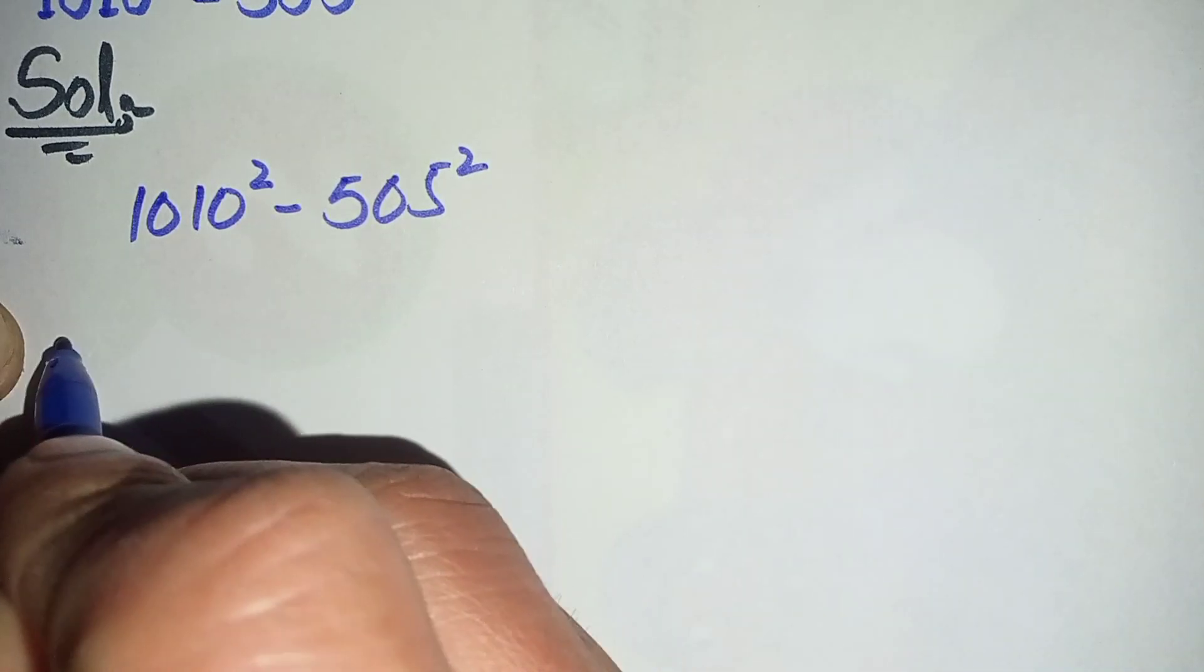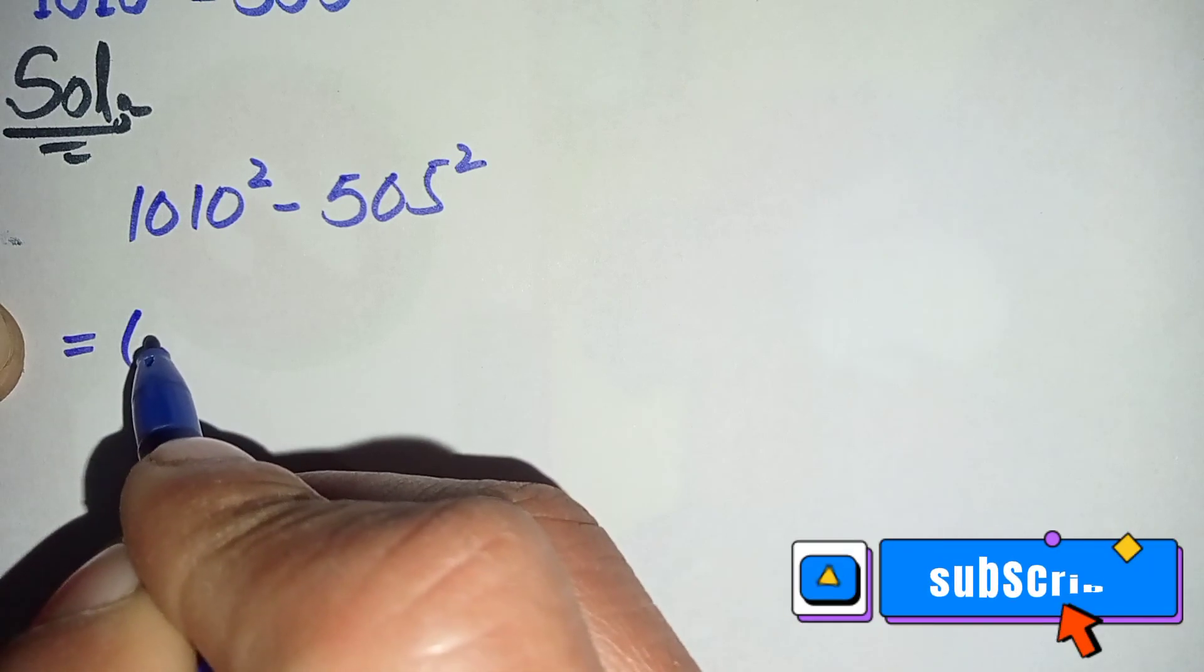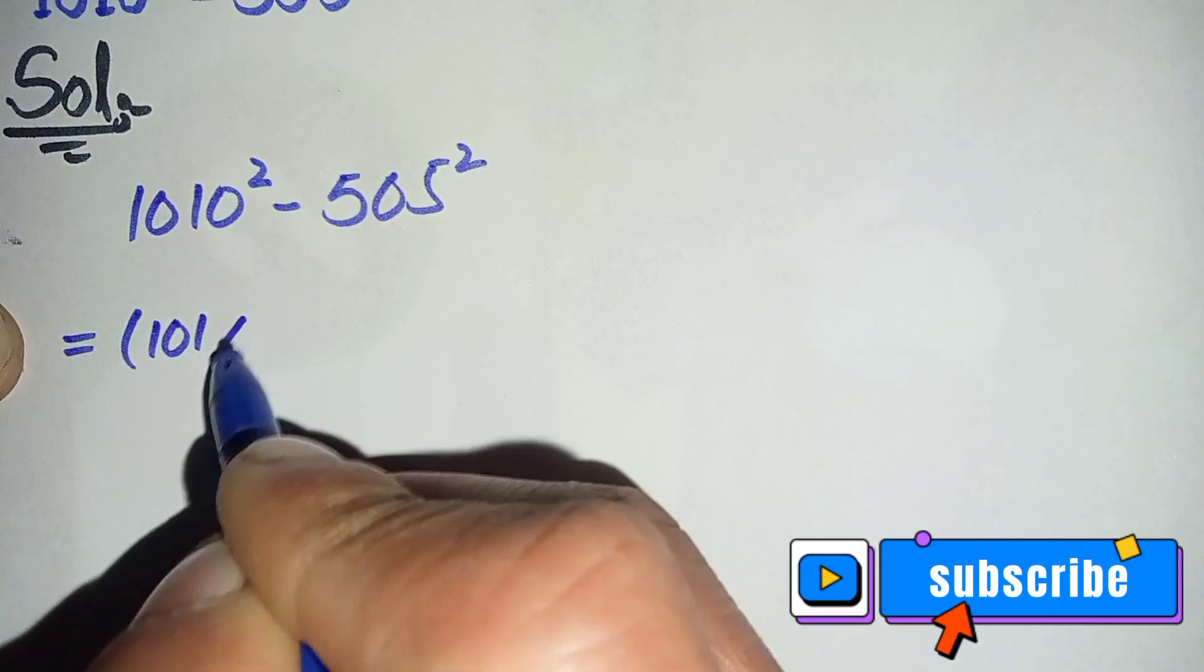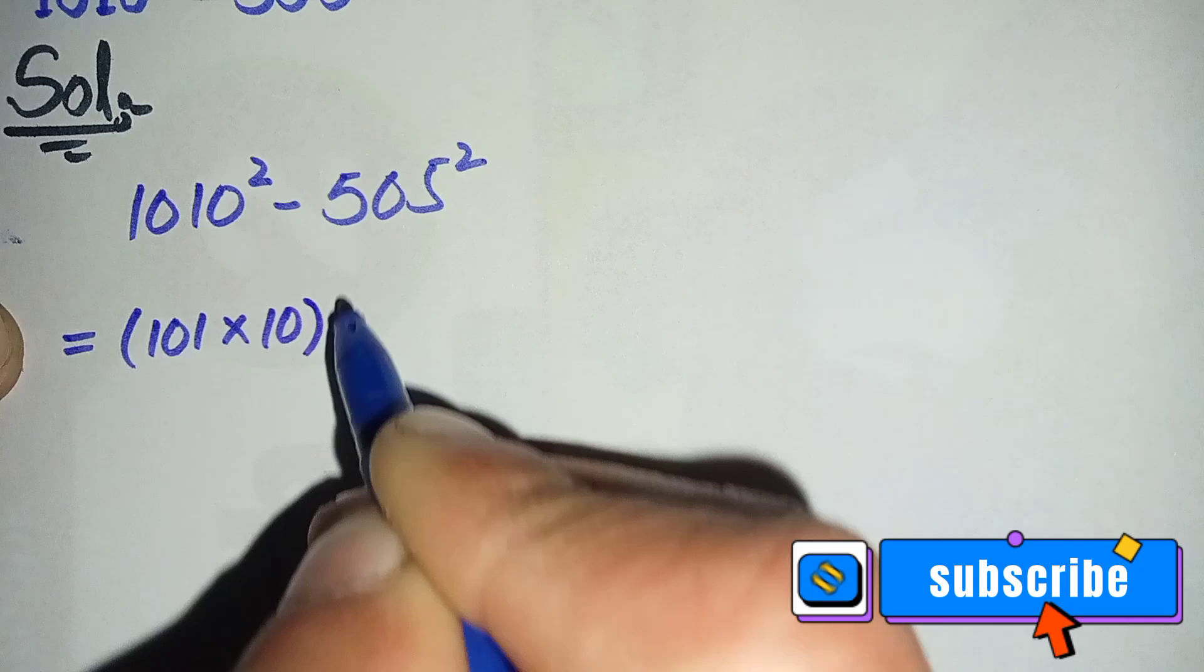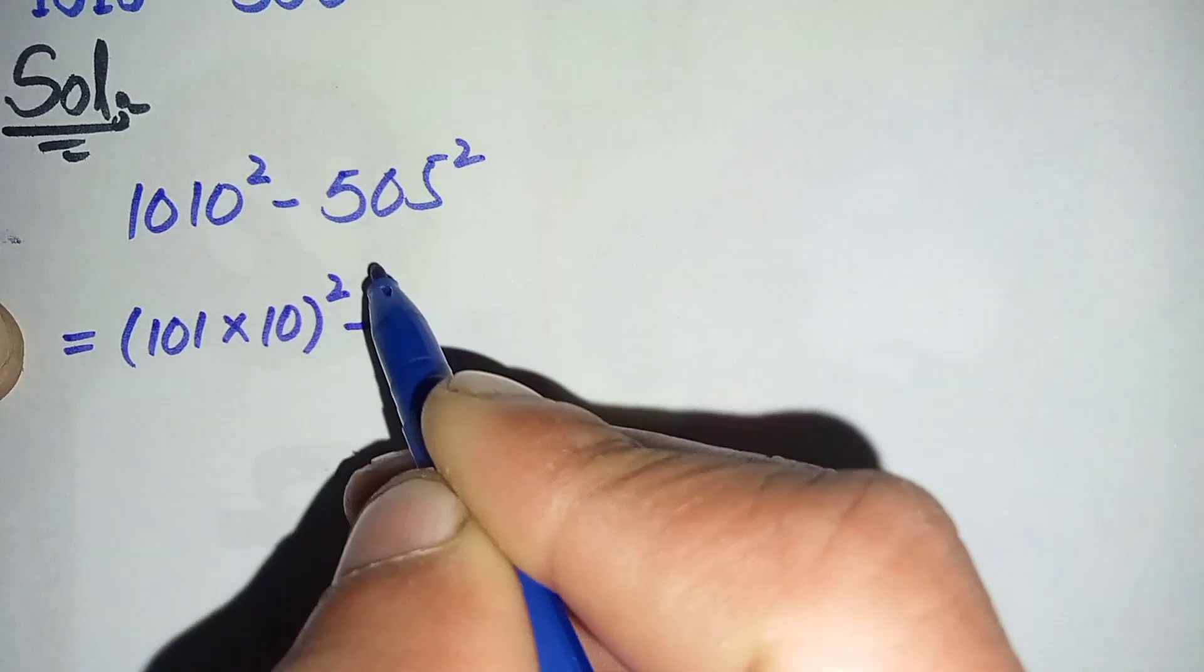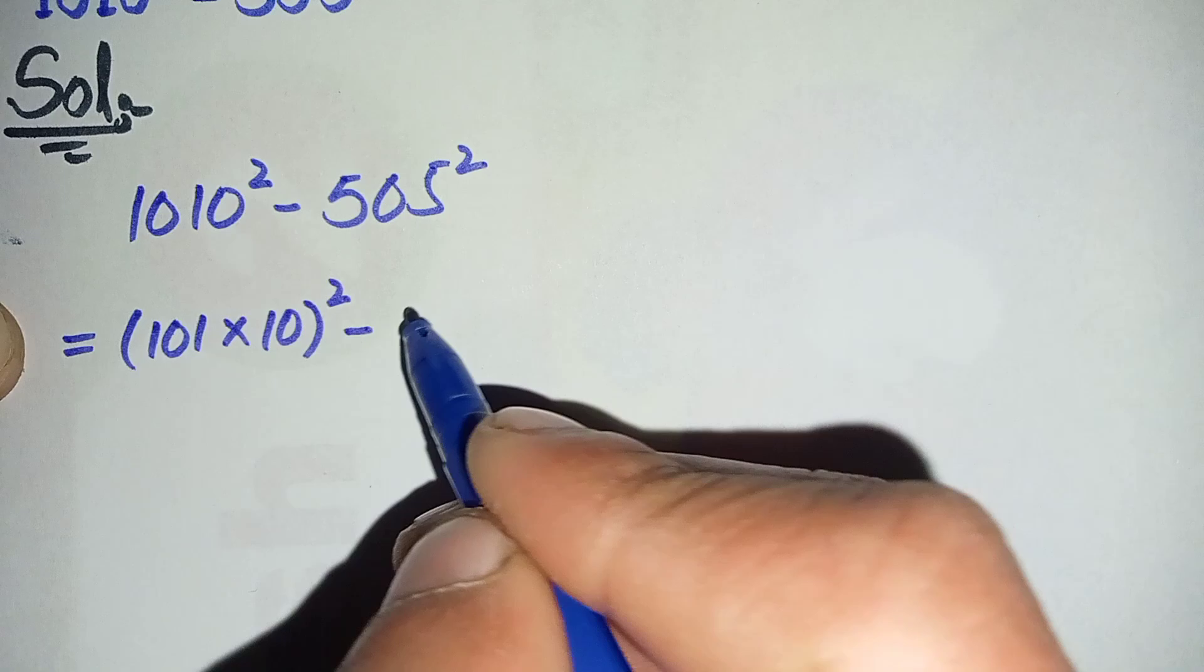Now in the next step we can write both the numbers as: we can write 1010 as 101 times 10 all squared, minus, and we can write 505 as 101 times 5 whole squared.